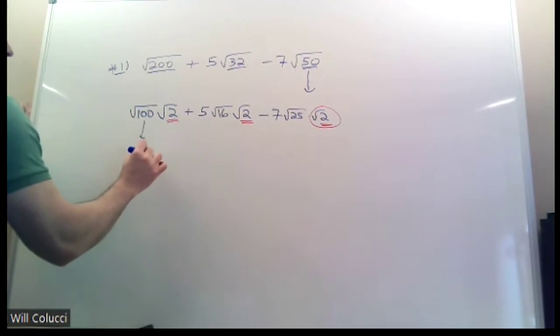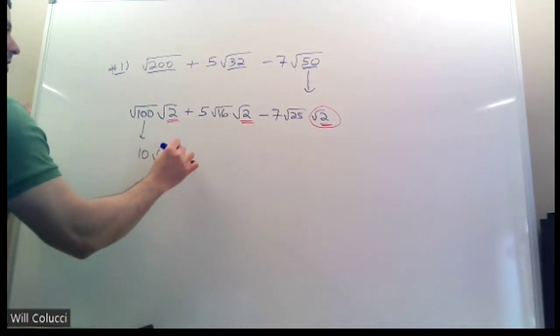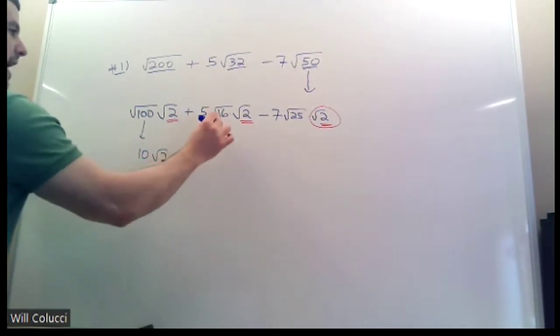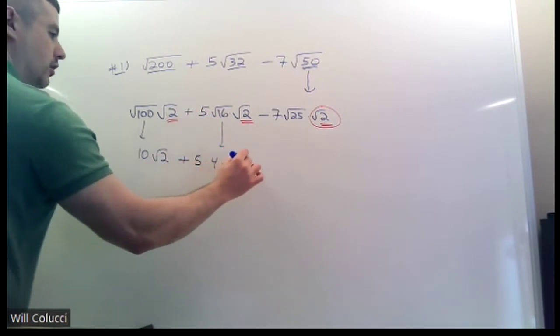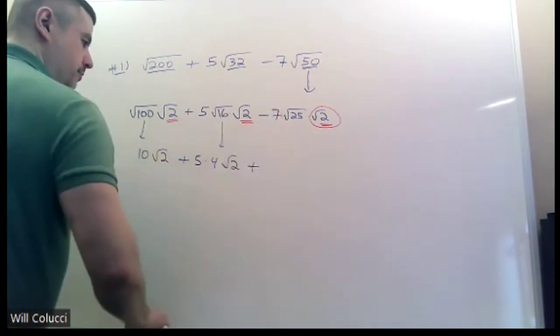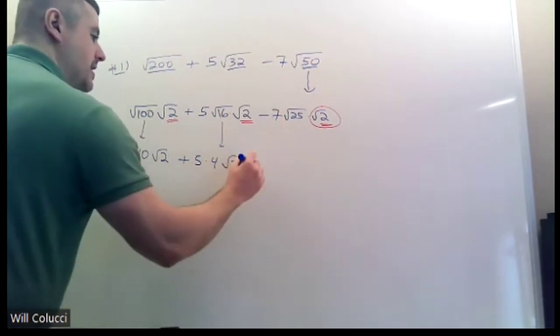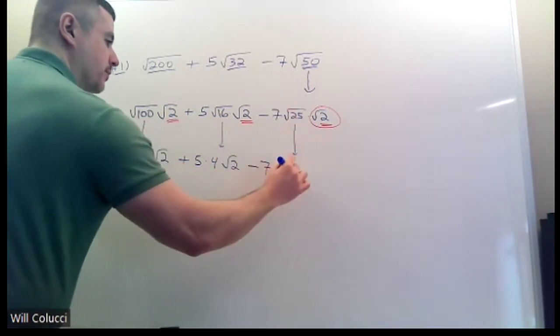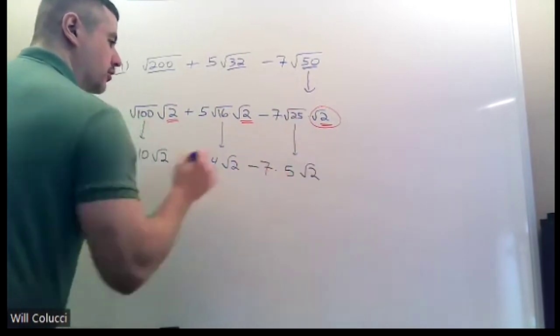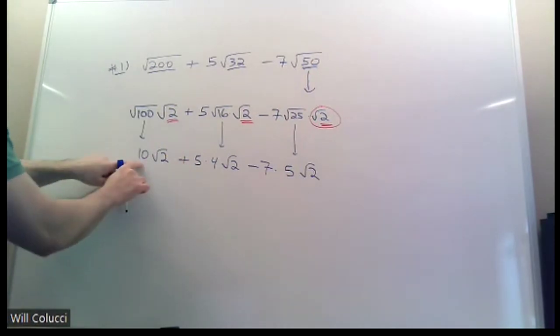Now start taking them out of jail. Square root of 100 is 10. Radical 2 goes along for the ride. 16 comes out of jail as a 4. The 5 was waiting for it. Radical 2 goes along for the ride. Minus 7. Negative 7 is outside the jail. You're going to multiply it by the square root of 25, which is 5. Radical 2 goes along for the ride.